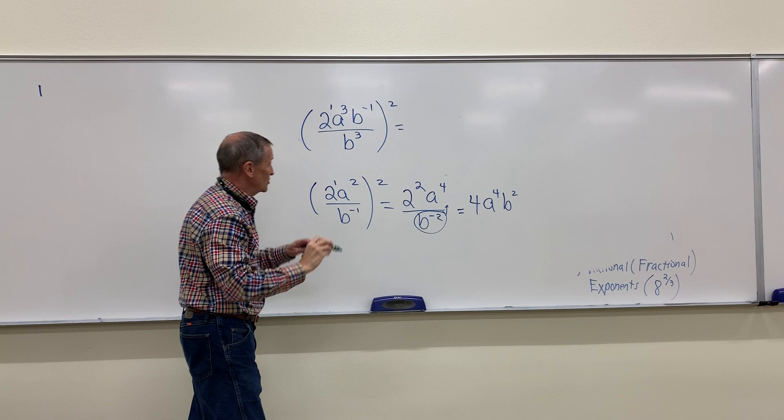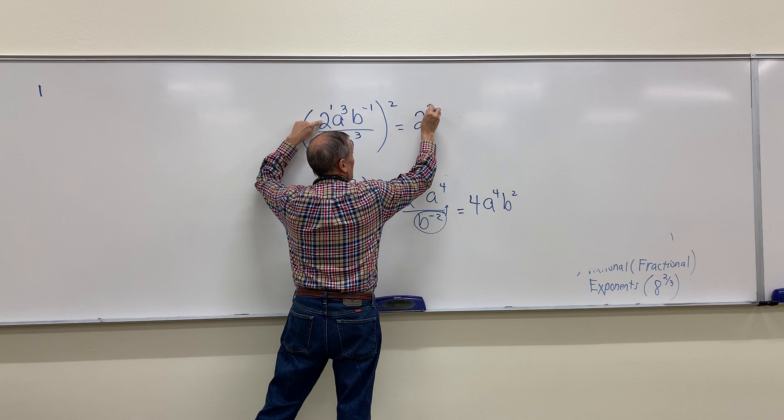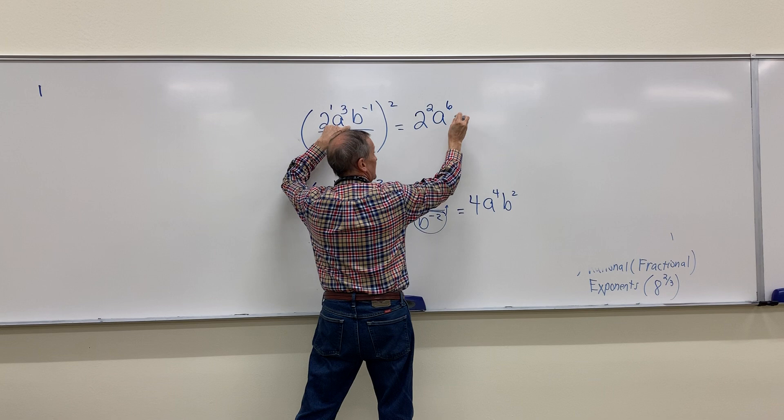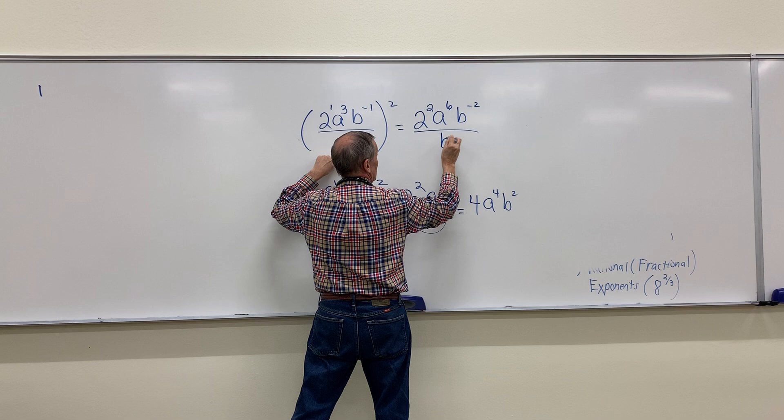So, I get 2 to the 2. I get a to the 6. I get b to the negative 2. And I get b to the 6. So, I multiply 2 times all my exponents.